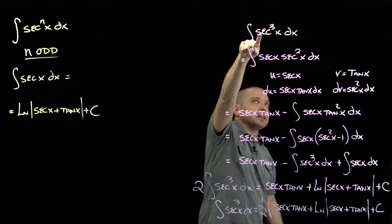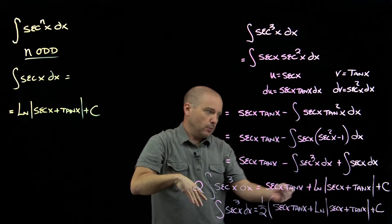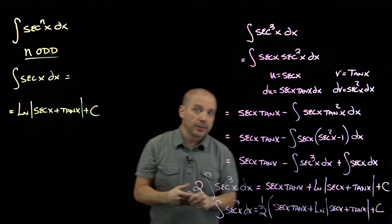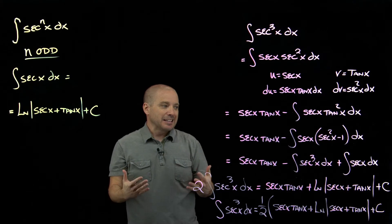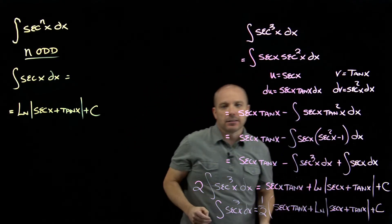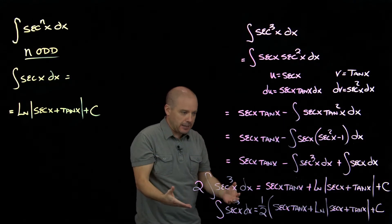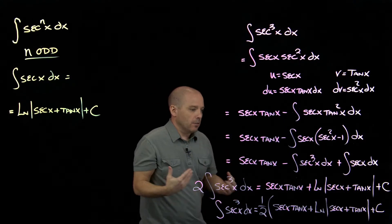If this was secant to the thirteenth, all this would have accomplished was to get us down to secant of the eleventh. Secant to the eleventh, we would do this whole process again to get it down to secant to the ninth, and then you'd do it again to get down to the seventh, fifth, third, first.